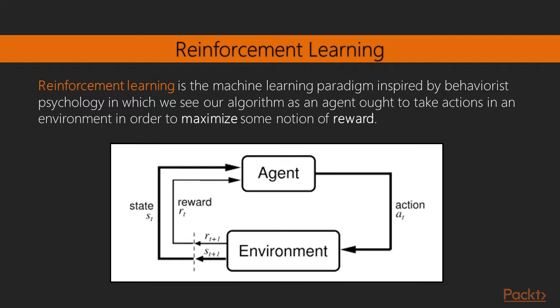Now let us consider the last learning paradigm we are going to explore in this course: reinforcement learning. This machine learning approach was inspired by behaviorist psychology, in which we see our algorithm as an agent who has to take actions in an environment — often complex and stochastic — in order to maximize some notion of reward. For example, if at time t we perform an action at on the environment, we obtain some form of reward and an updated state of the world after the action has produced its effects, and we are then ready to proceed and perform the following action based on state s(t+1).